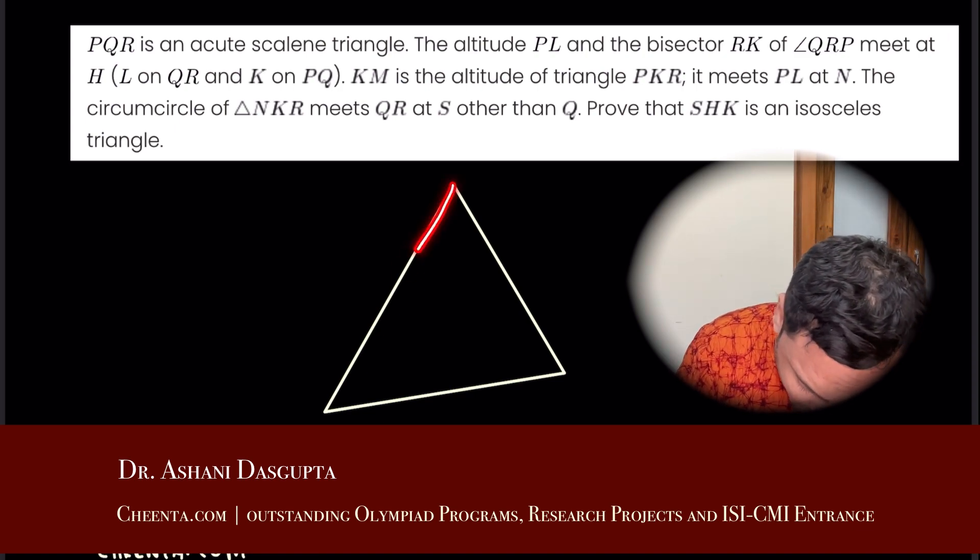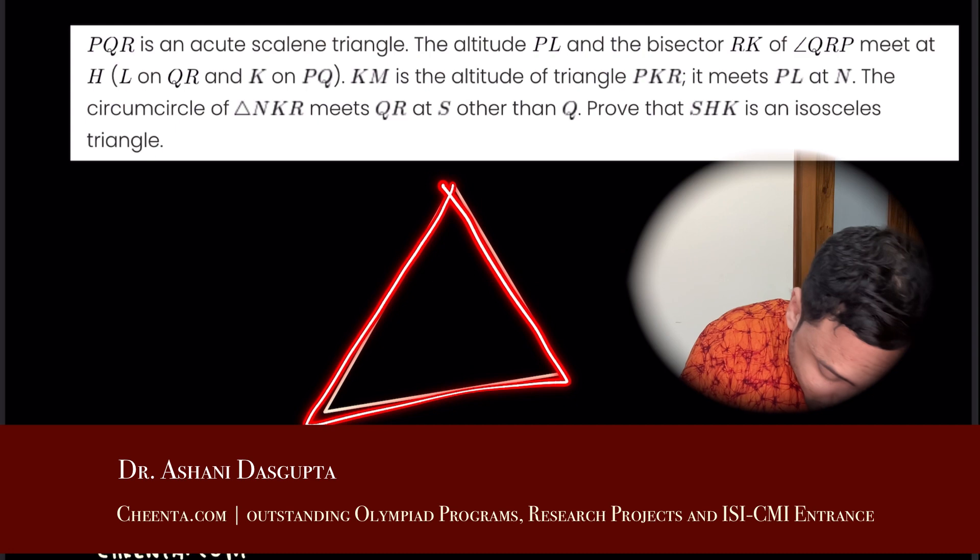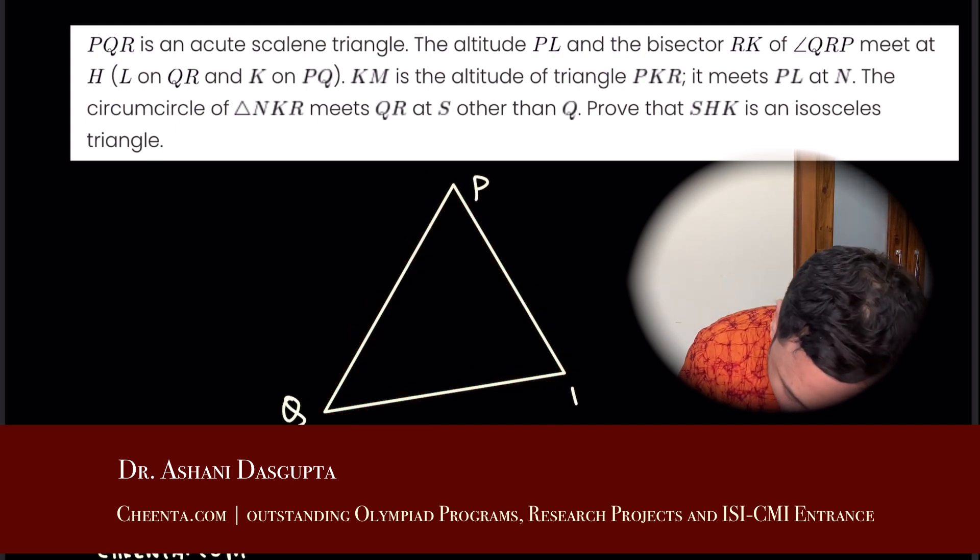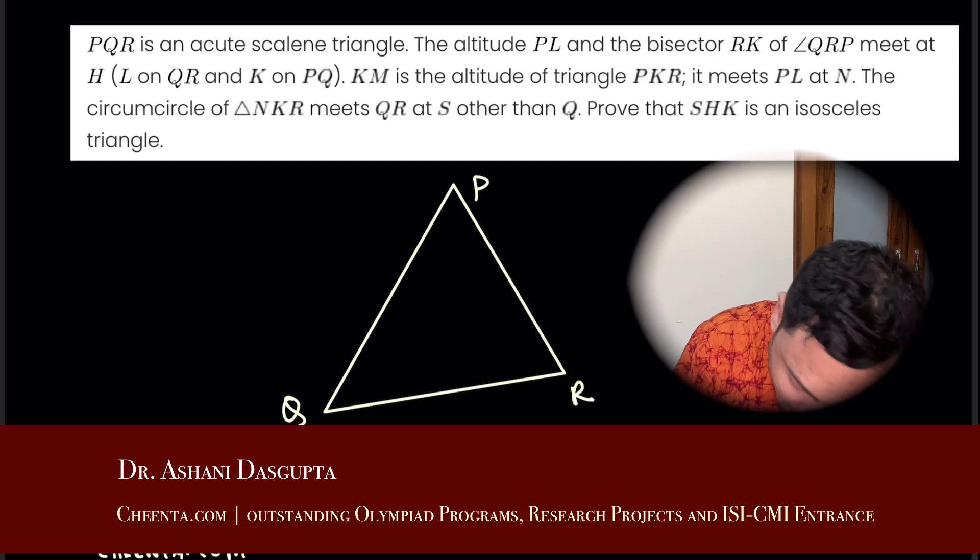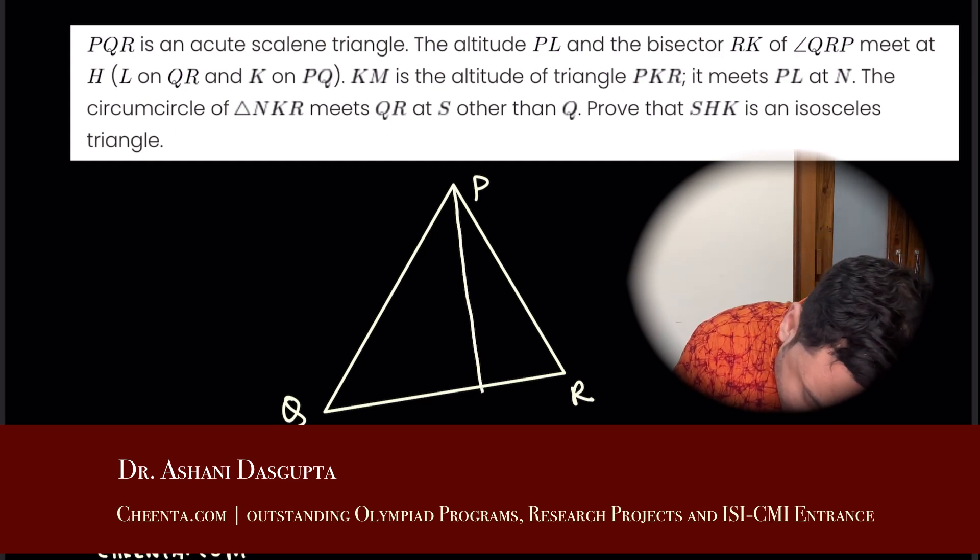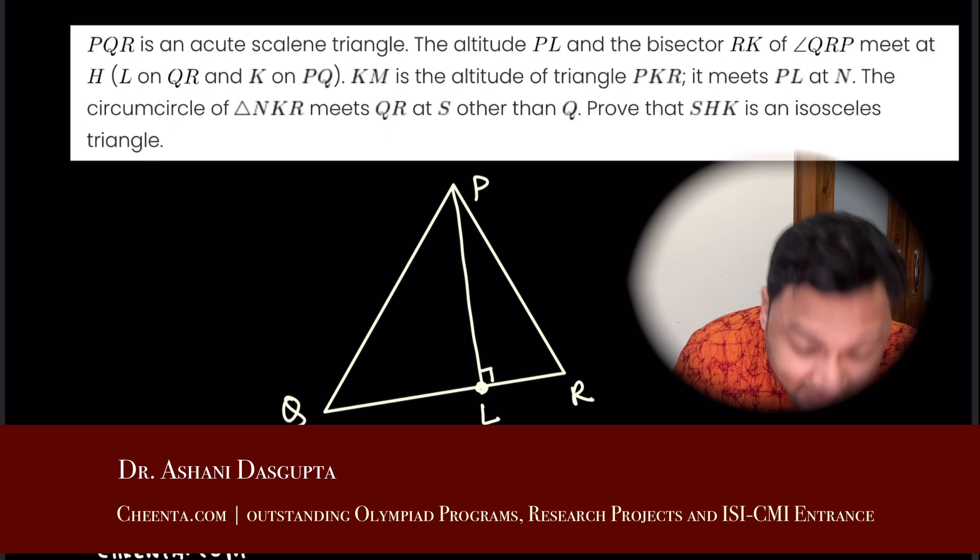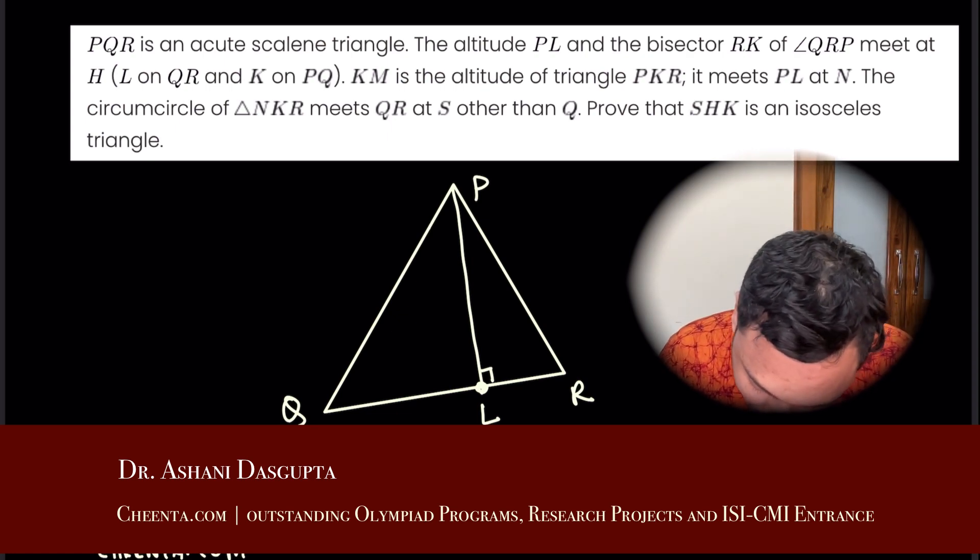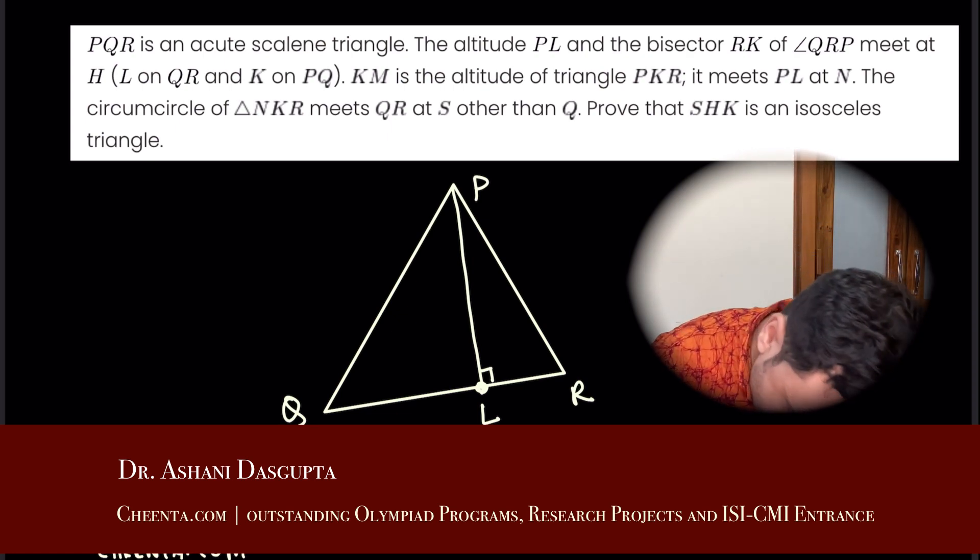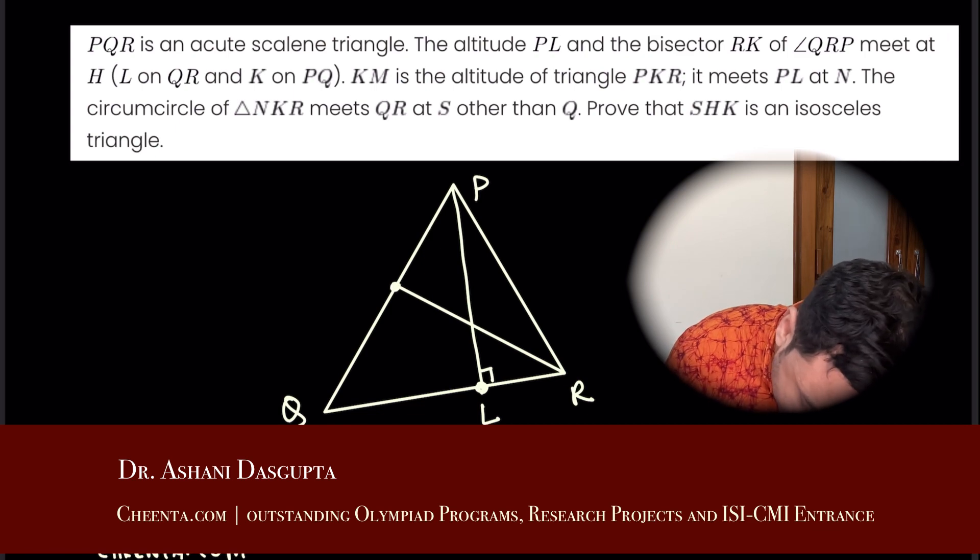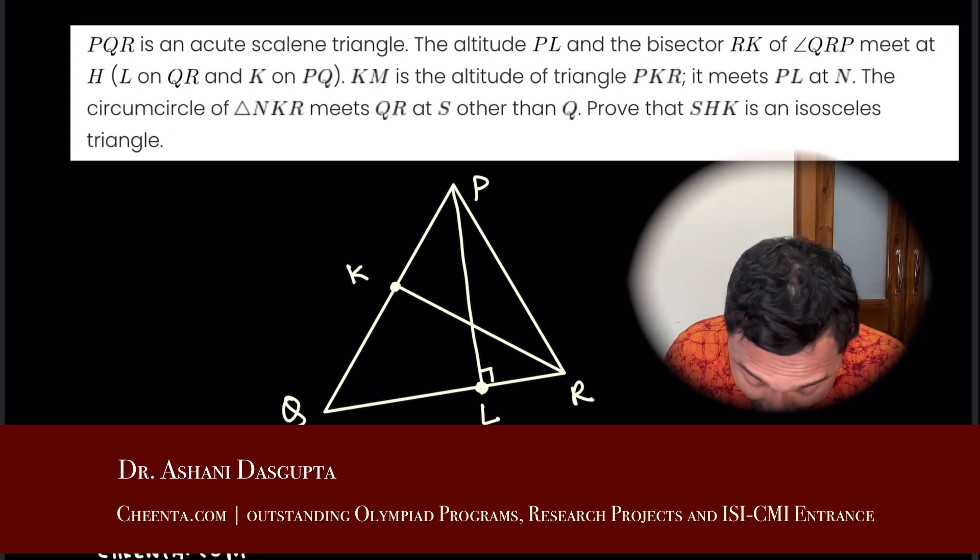So what this problem says is that we have a triangle which is PQR. We draw an altitude PL, where this angle is 90 degrees. And we draw the bisector of angle R, which is RK, the bisector of angle R.